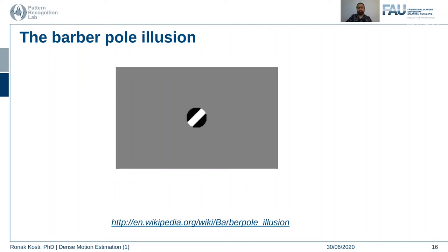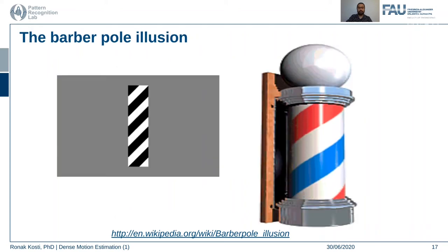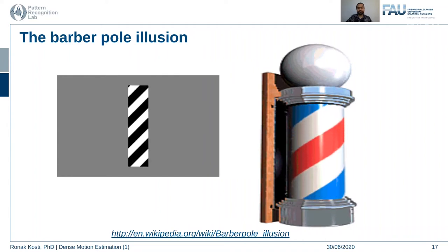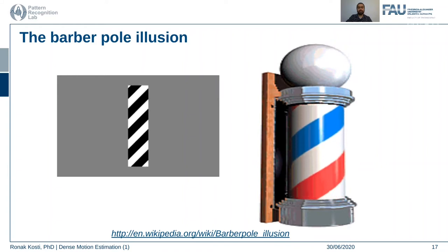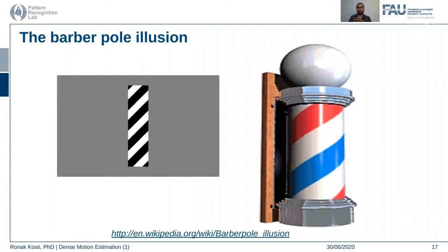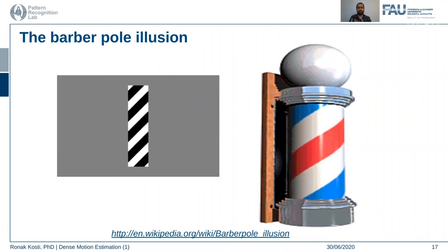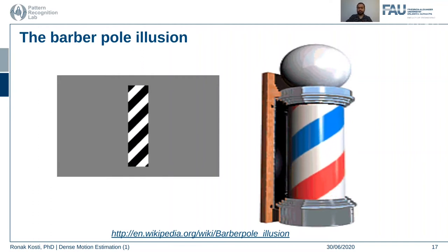Another related problem is the barber pole illusion. What's happening is there are lines which appear to move from top-left toward bottom-right, however they are simply rotating over a cylinder. If you look through a small fixed-size aperture it can give you a perception of movement in the wrong direction. The barber pole illusion is another problem that can be faced in motion estimation.